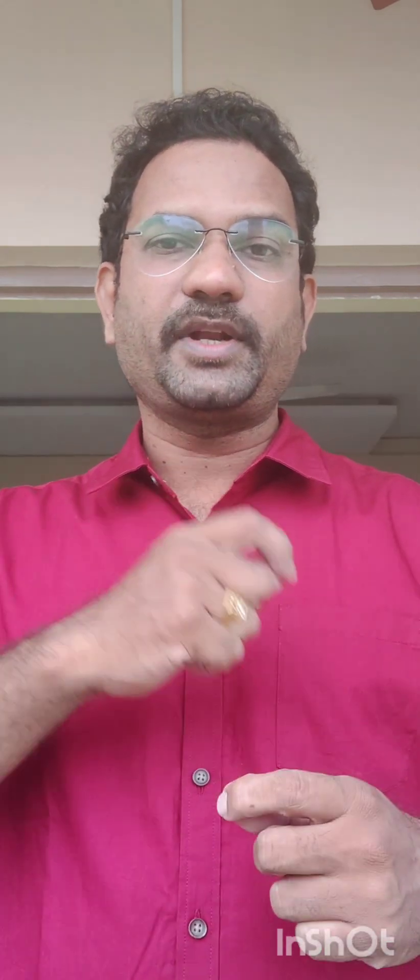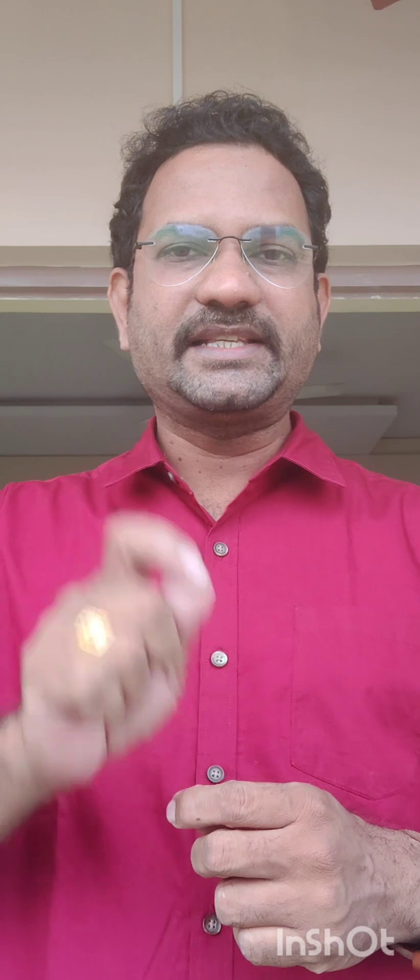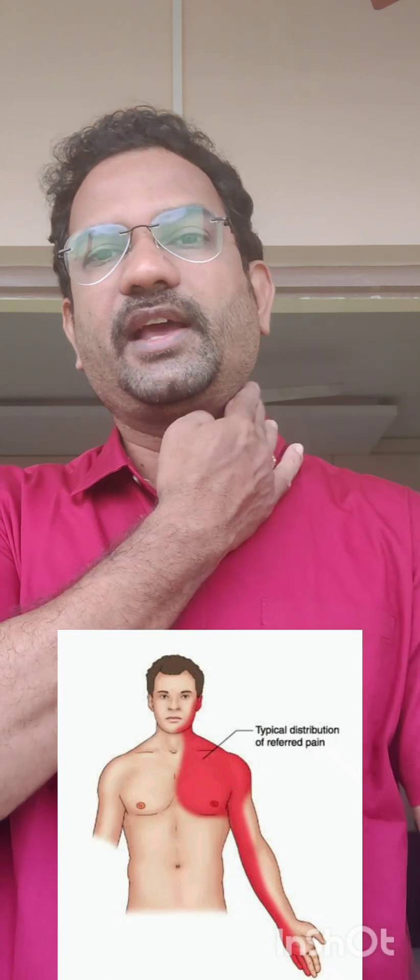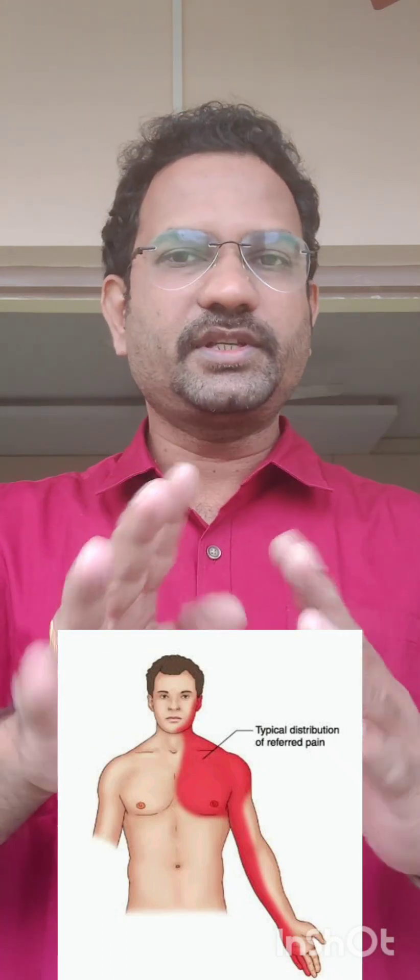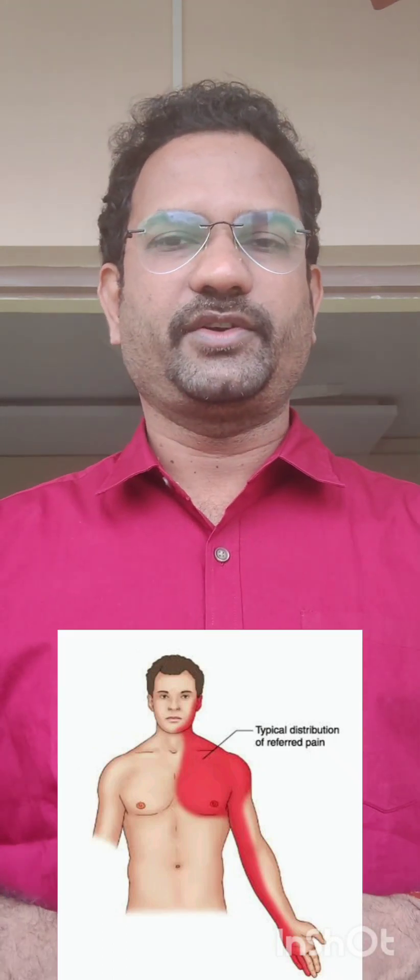So when there is a reduced blood supply to the heart, that is called ischemic heart disease. When blood circulation to the heart is reduced, you get a sharp pain — that is called angina pectoris. The pain radiates to the left shoulder, left neck, and left jaw. This is called angina pectoris.